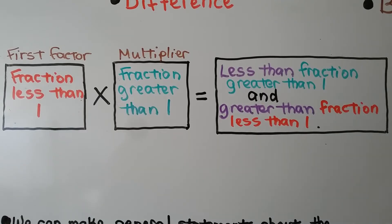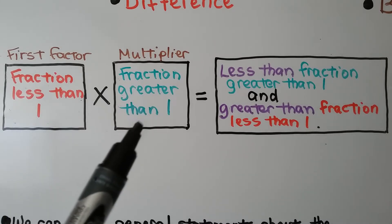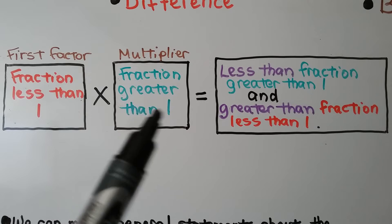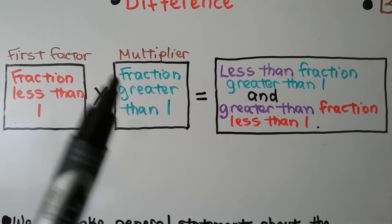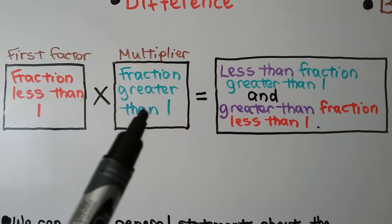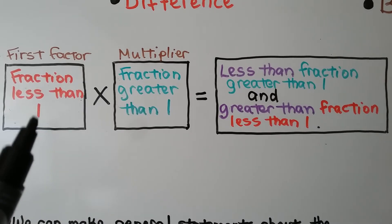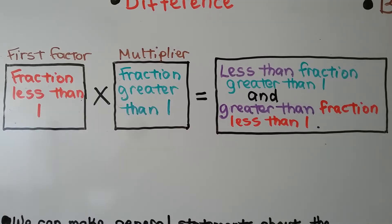Here we have a first factor that is a fraction less than 1, and our second factor is a fraction greater than 1. The product is going to be less than the fraction greater than 1, and it's going to be greater than the fraction less than 1.